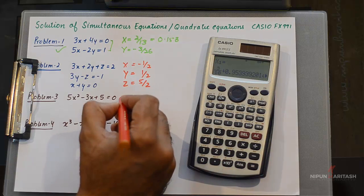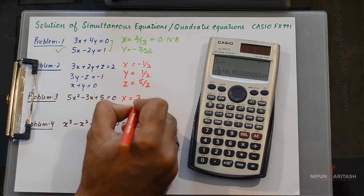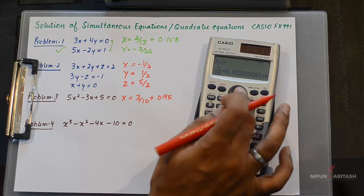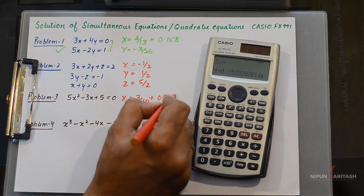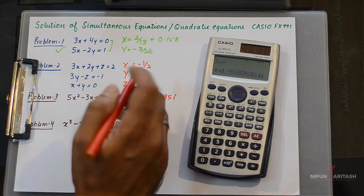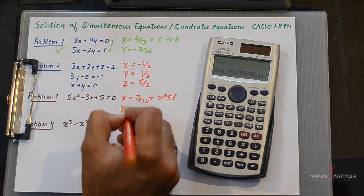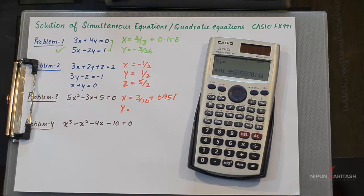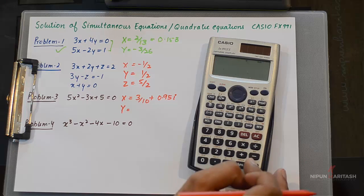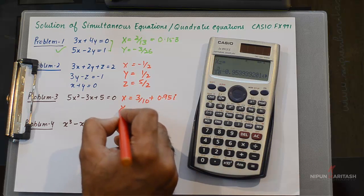The first root is 3/10 + 0.95i. This is one cool feature of this calculator—it gives you the roots of the equation directly in complex number form. Press equal again and the other root